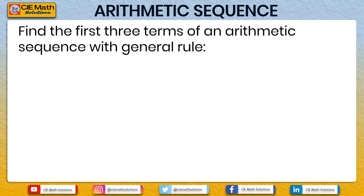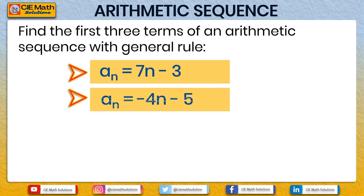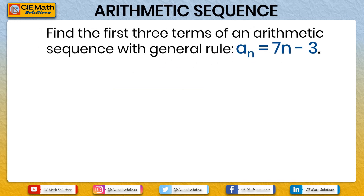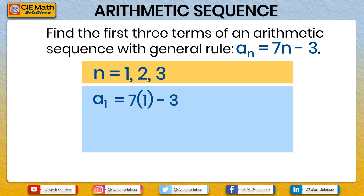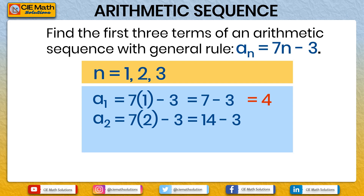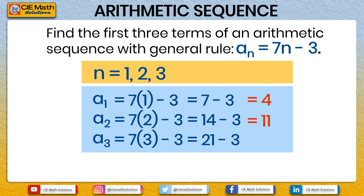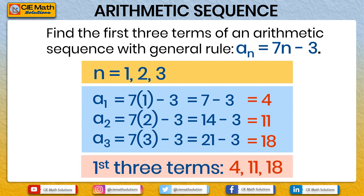Let us have a few more examples. Find the first three terms of an arithmetic sequence with the general rule AN equals 7N minus 3. Substituting 1, 2, and 3 for N: A1 equals 7 times 1 minus 3, which is 7 minus 3, equal to 4. A2 equals 7 times 2 minus 3, which is 14 minus 3, equal to 11. A3 equals 7 times 3 minus 3, which is 21 minus 3, equal to 18. Therefore, the first three terms are 4, 11, and 18.